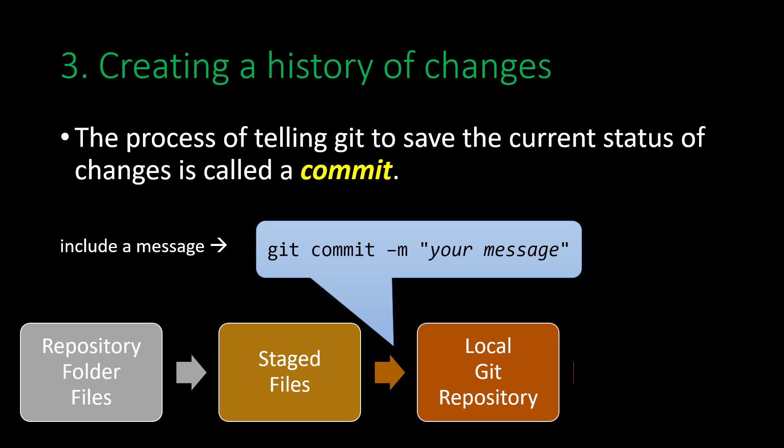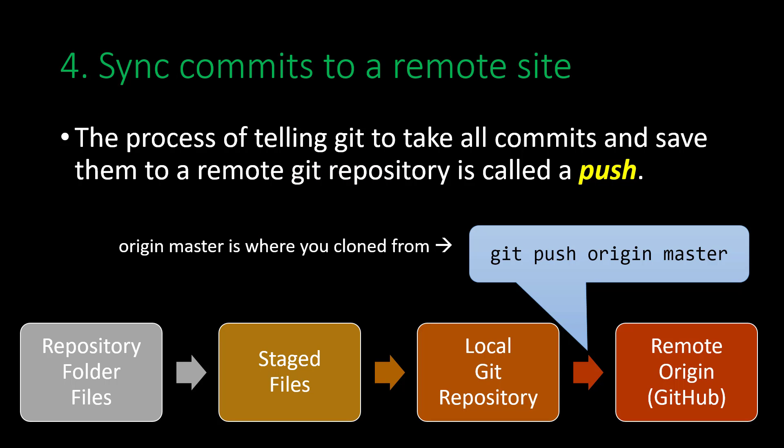You should include a meaningful message with your commit — it should describe the work that you did during that coding session. With our changes committed, we might want to send them to GitHub or any other remote repository we've set up. The process of telling Git to take all commits and save them to a remote repository is called a push. When you push, you'll say origin master, because we're only using a single branch called master and origin refers to the place where we initially cloned the repository. You'll only type git push origin master because in our simple scenario we only have one remote and one branch. If you are working with a team or on multiple devices, you might need to pull changes from remote into your local repository — that's the opposite of a push, called a pull.